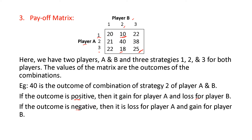If the outcome is negative, then it is a loss for player A and a gain for player B. For example, consider a value of positive 40 — the combination of the second strategy of player A and second strategy of player B gives outcome 40, which means gain for player A and loss for player B. If that value were minus 40, it would be loss for player A and gain for player B.